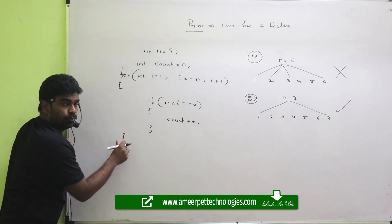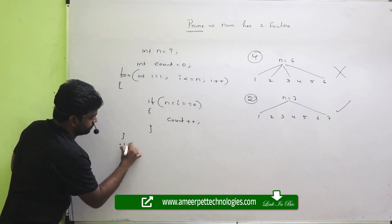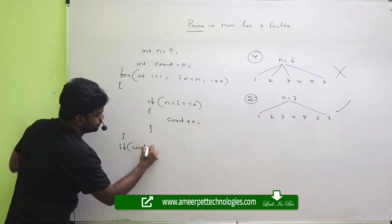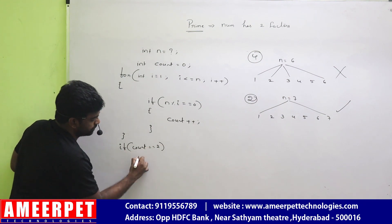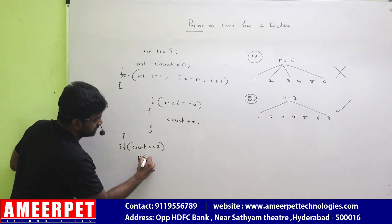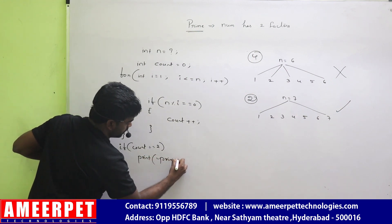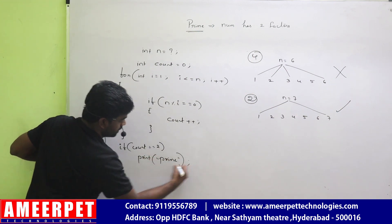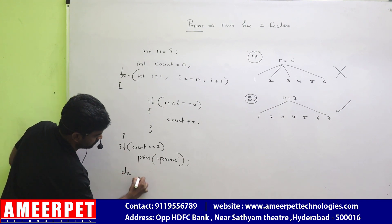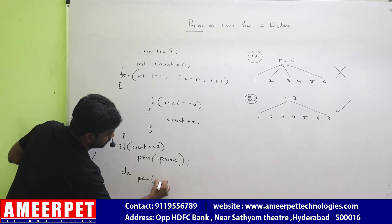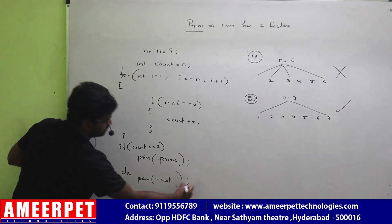So outside the loop, we are checking like this: if the count value equals two, then we print that it's a prime number. Else, print it's not a prime number.